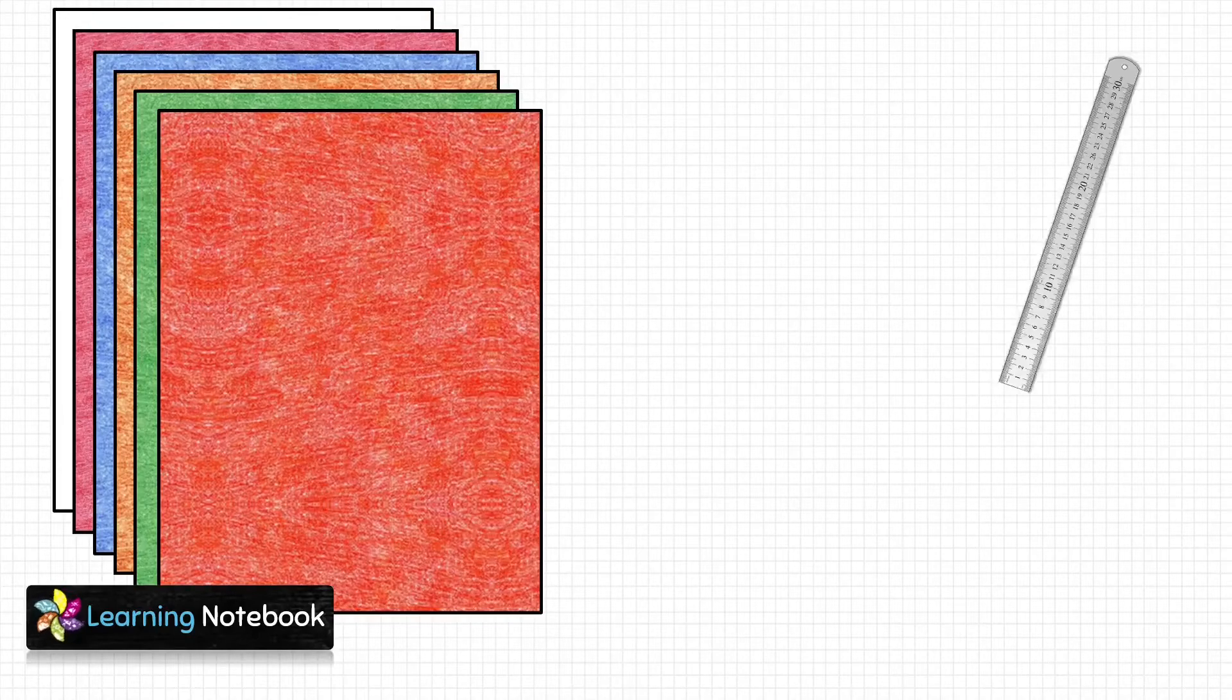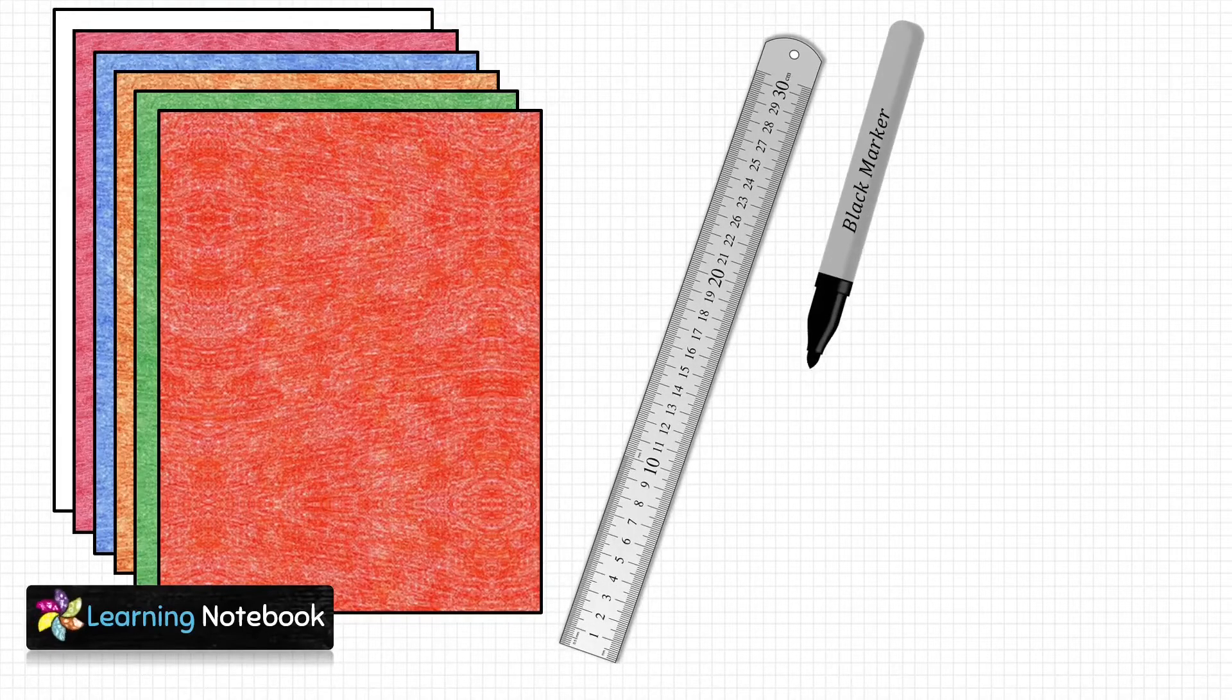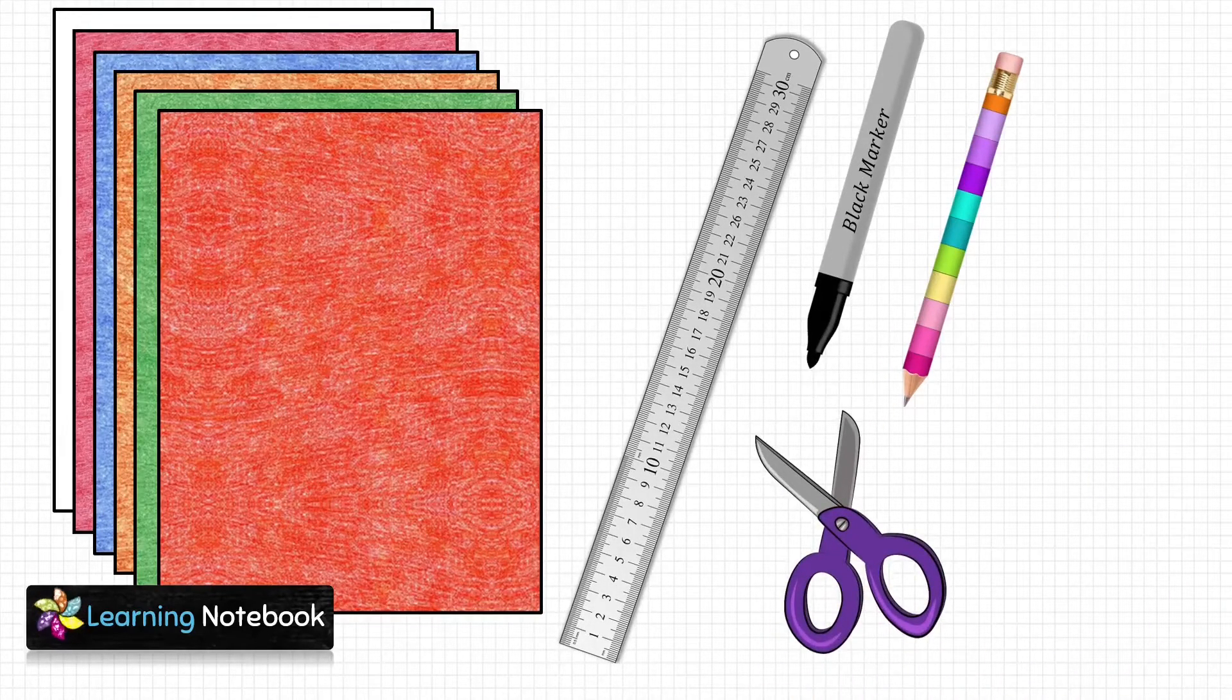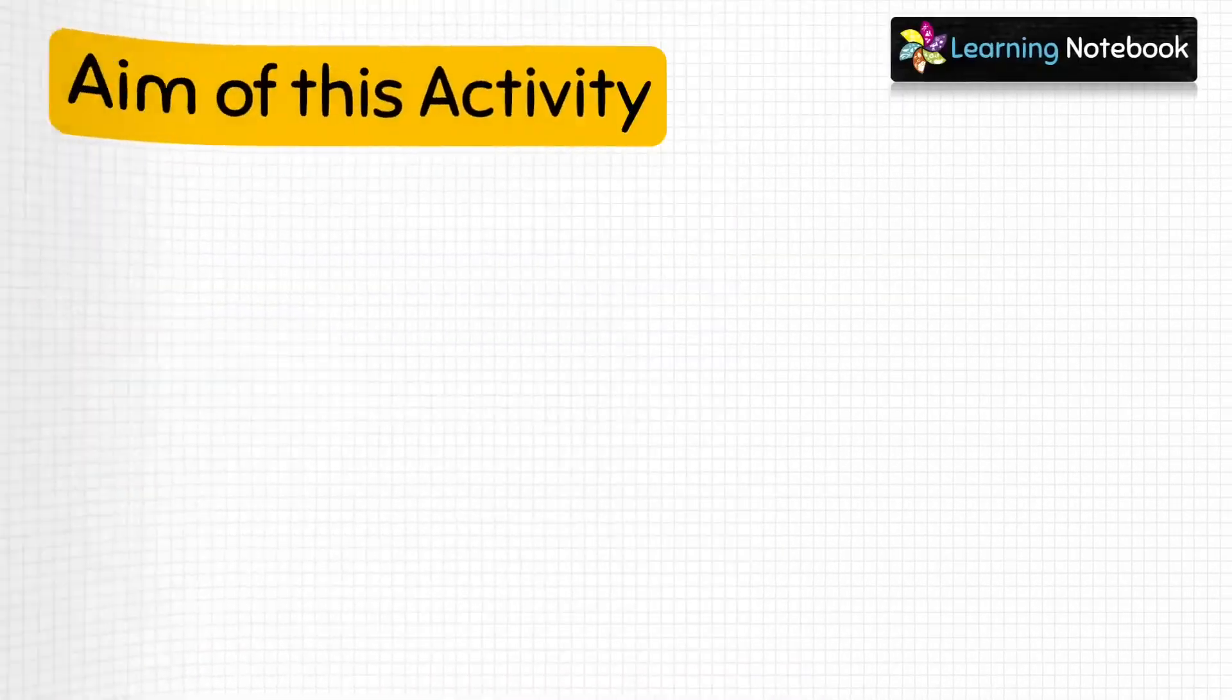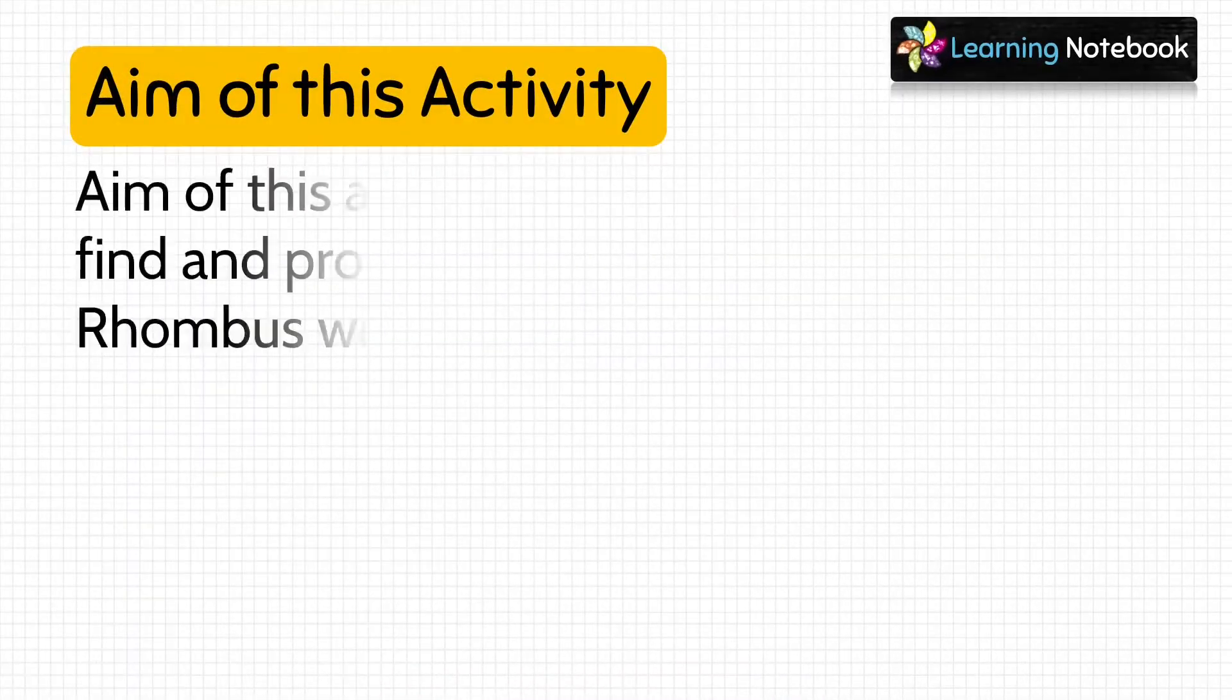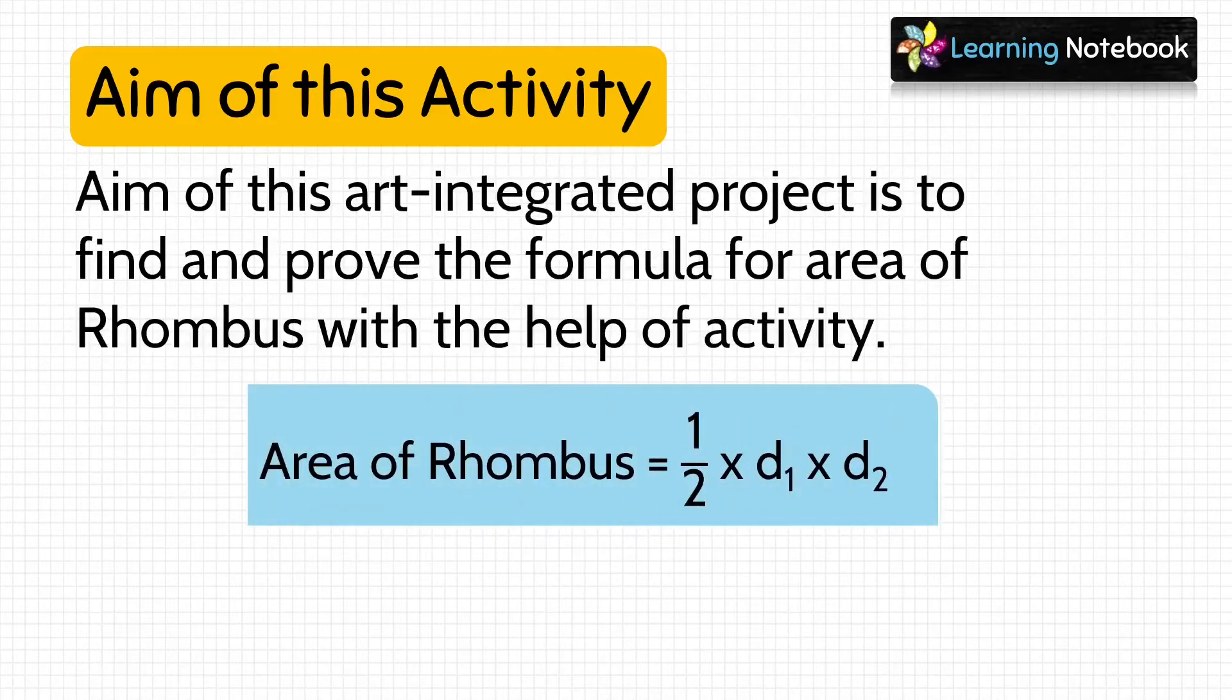For this activity we need a few colorful thick sheets, a ruler, a black marker pen, a pencil, and a pair of scissors. The aim of this art integrated project is to find and prove the formula for area of rhombus with the help of this activity: area of rhombus equals 1/2 × d₁ × d₂.